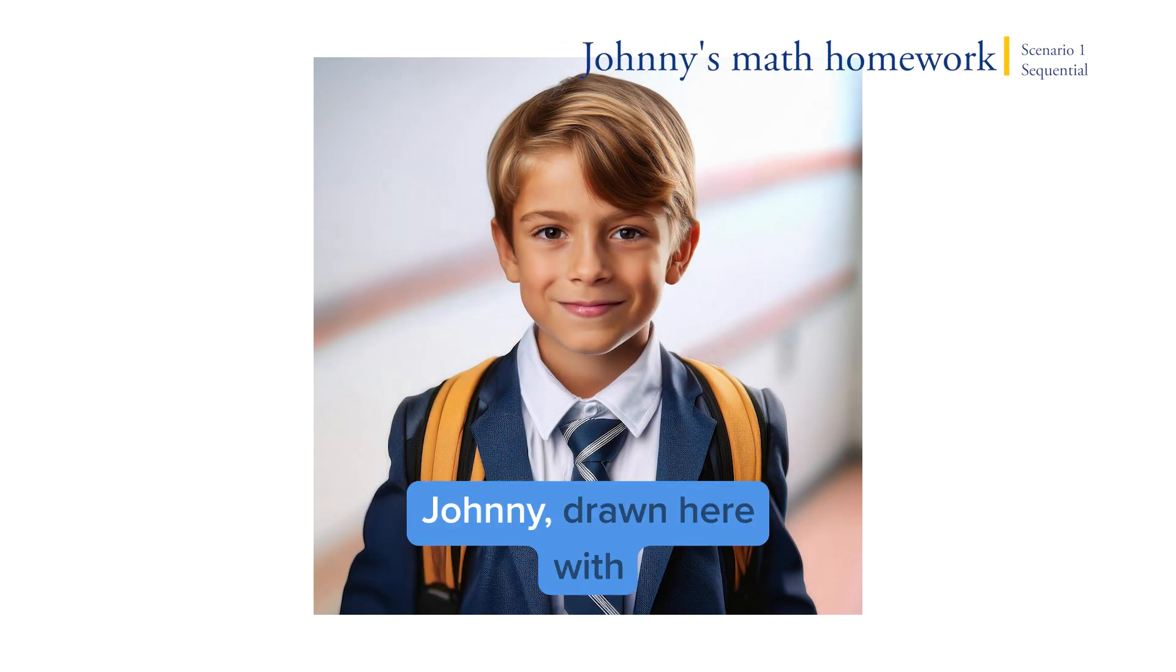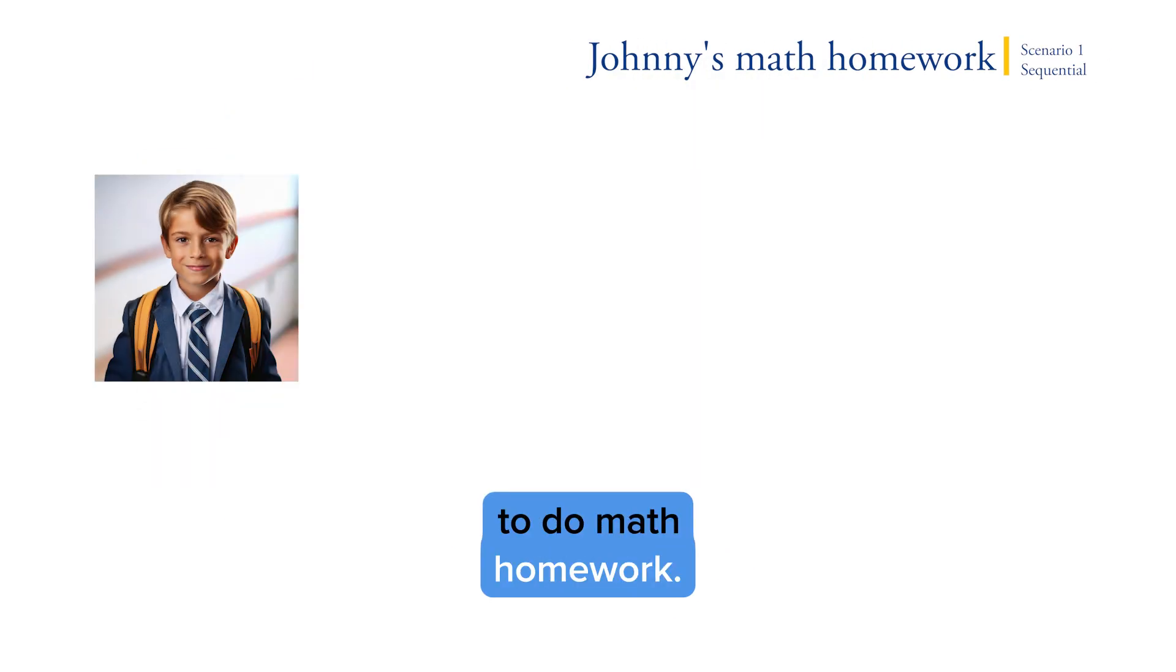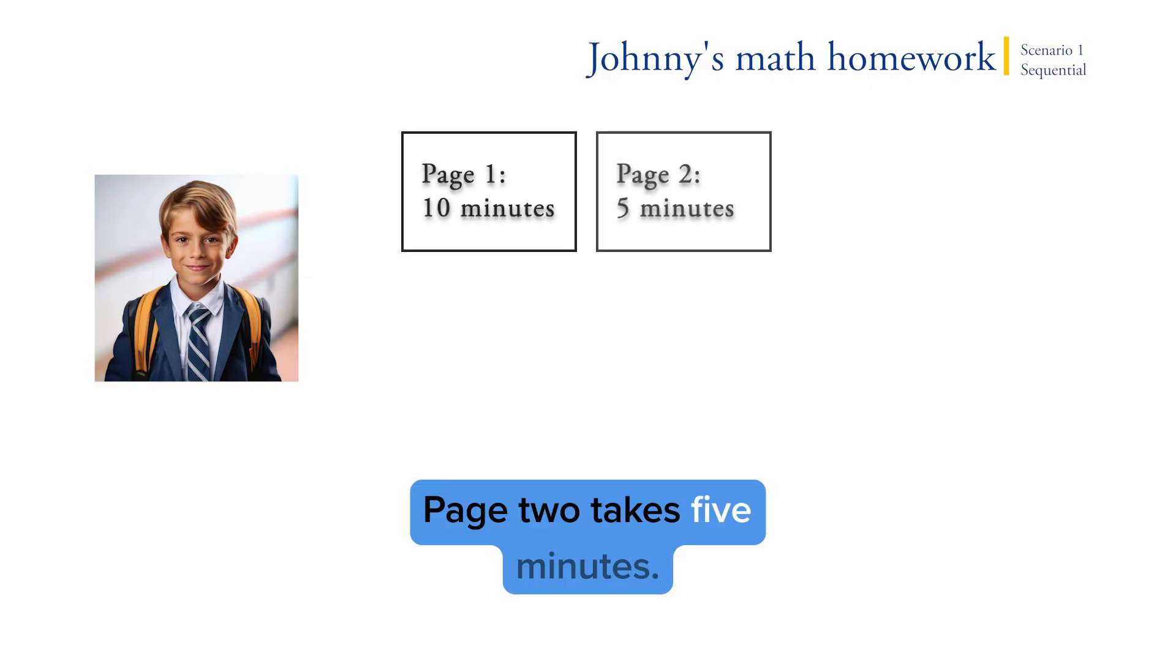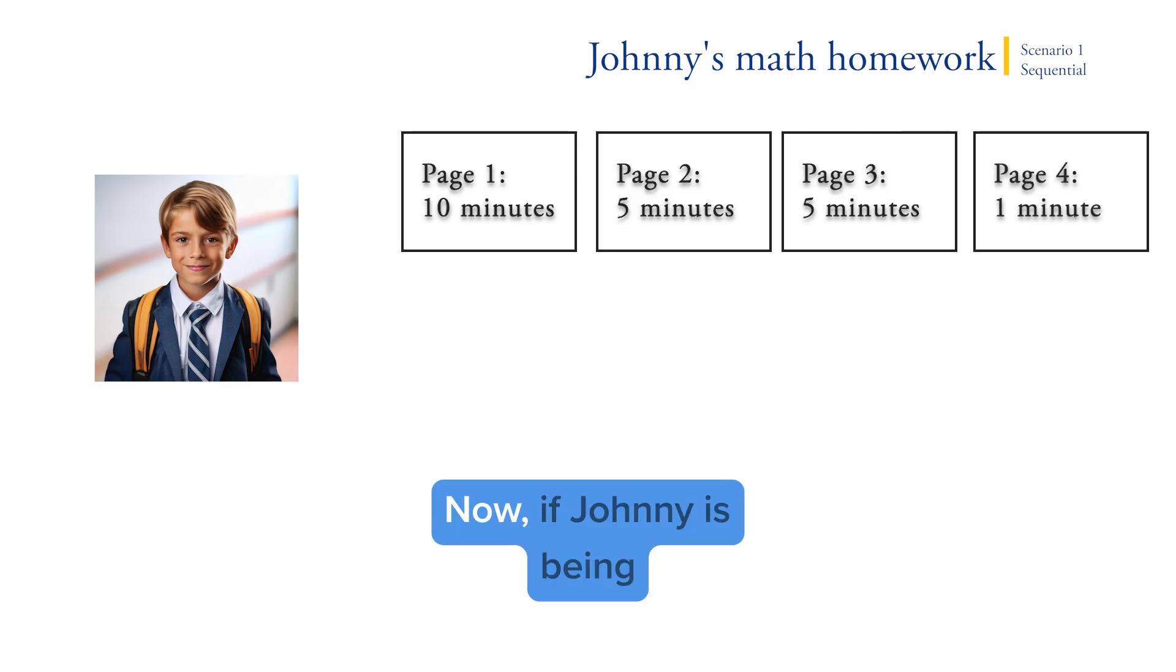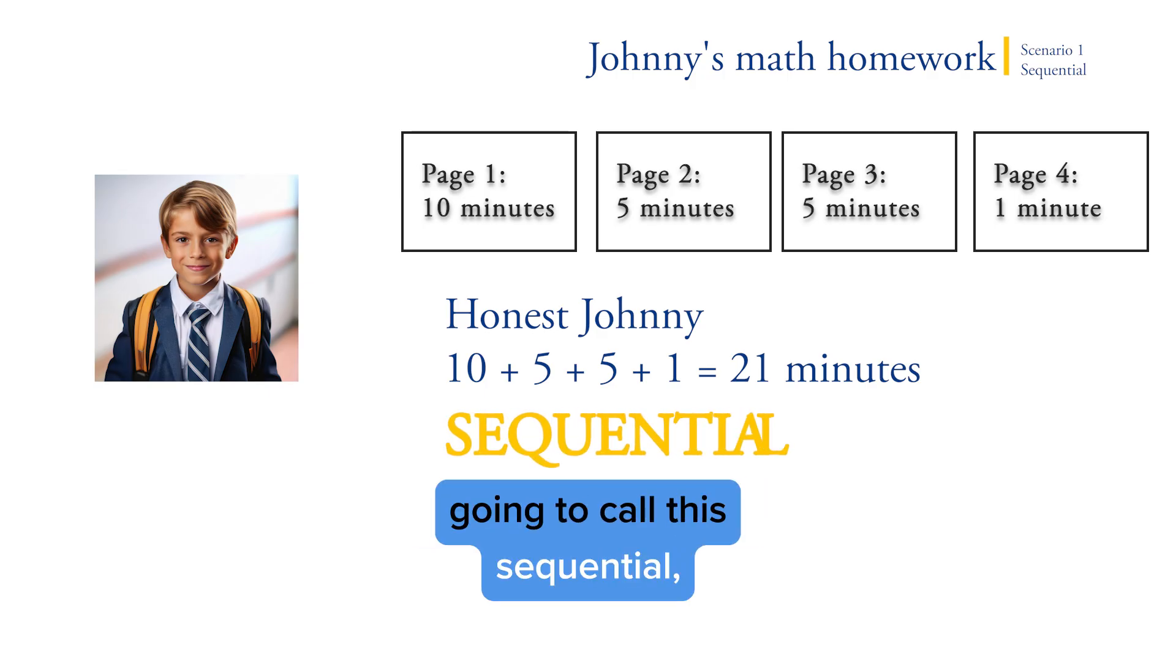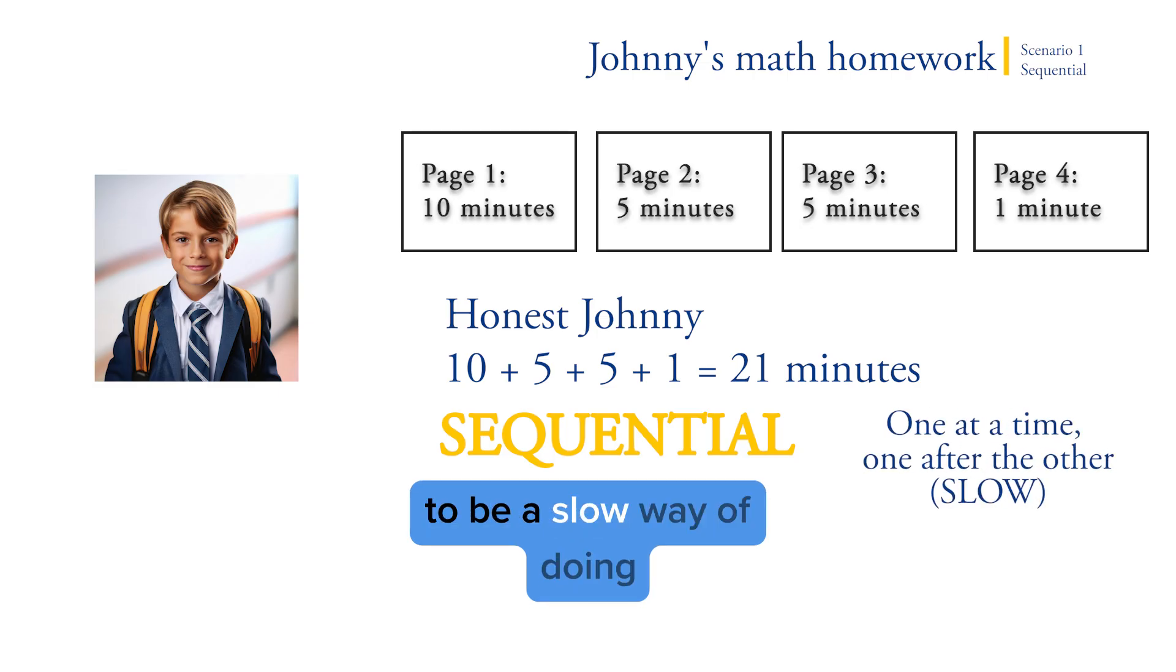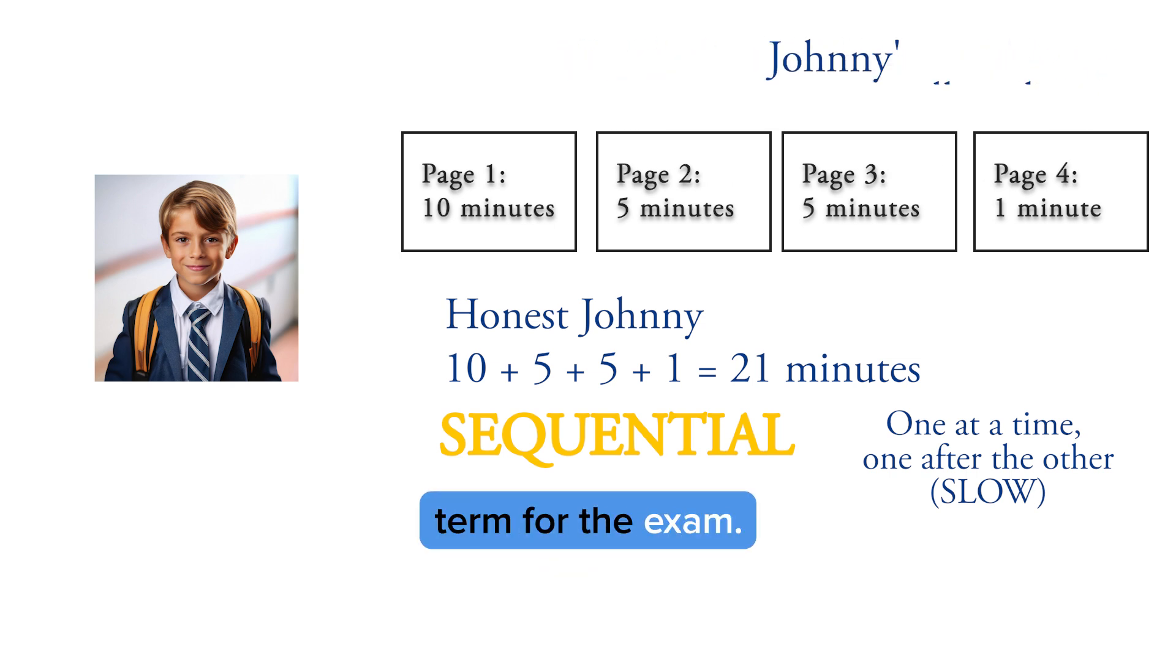Let's say we have Johnny drawn here with AI, and Johnny needs to do math homework. Page one takes 10 minutes, page two takes 5 minutes, page three takes 5 minutes, and page four takes 1 minute. Now, if Johnny is being honest, his homework will take 21 minutes to complete: 10 plus 5 plus 5 plus 1. In computing terms, we're going to call this sequential, which means one at a time. This is going to be a slow way of doing things. Again, the term is sequential, which is one at a time and slow. You have to know this term for the exam.